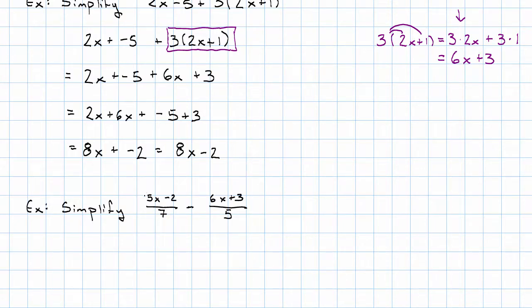My very first move is to rewrite that as multiplication. I need to remember that the fraction bar serves as a grouping symbol, so I'm going to need to group my numerators together. I'll have the quantity 5x plus negative 2 times 1 seventh plus the quantity negative 6x plus 3 times 1 fifth.